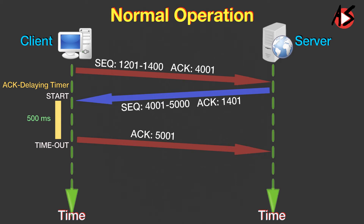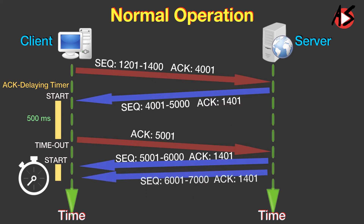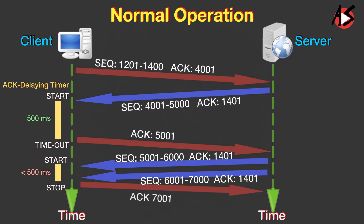However, when the next segment arrives, another delayed ACK timer is set. Before it matures, the third segment arrives. Now the client does not wait for the timer to mature, because to prevent unnecessary retransmission, it sends the acknowledgement immediately. We have not shown the retransmission timeout timer because no segment is lost or delayed — we just assume that this timer performs its duty.